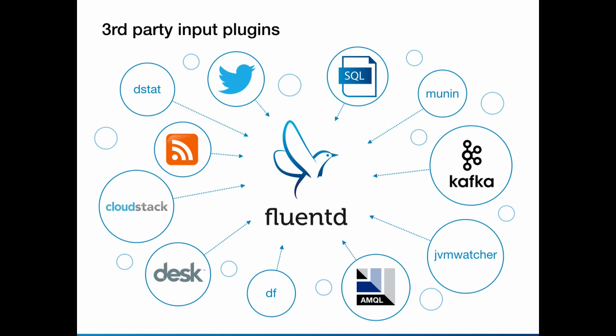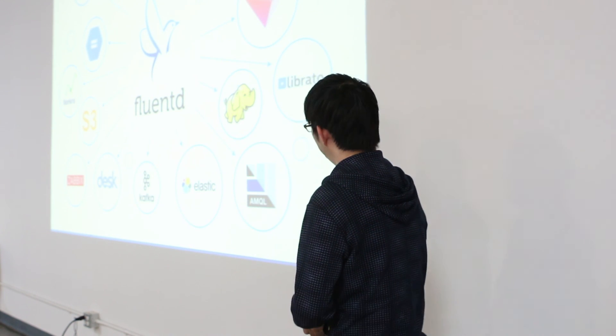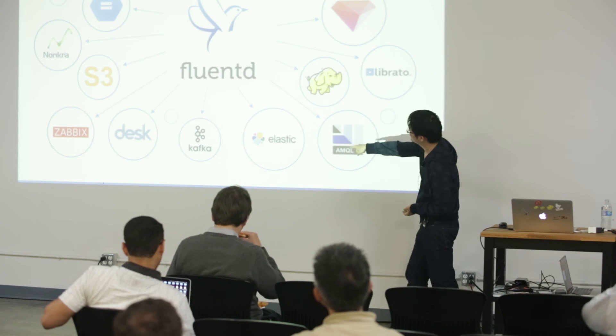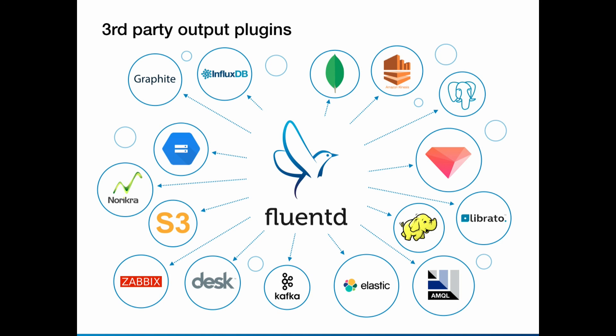There are many, many plugins — Kafka input, SQL input where you can read from MySQL, or other web services like Desk and MQ. For debugging tools, there's JVM Watcher. There's a website called the Fluentd Plugin List where you can search. For output: MongoDB, Elasticsearch, Kafka, Desk, Hadoop, InfluxDB, Graphite, and more. Recently, many people invent new technologies. We don't want to change applications — someone writes a plugin and we change the configuration. That's it. Then we can store data to a new system using the new technology.